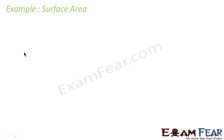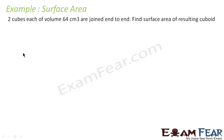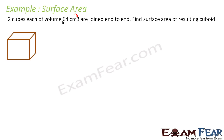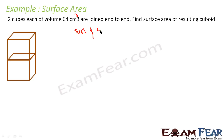Let's take a practical example. Two cubes, each of volume 64 cm³, are joined end to end. Find the surface area of the resulting shape. Since the volume of a cube is side³, and side³ = 64, we get side = 4 cm, because 4 × 4 × 4 = 64.